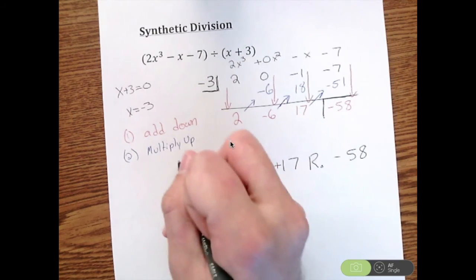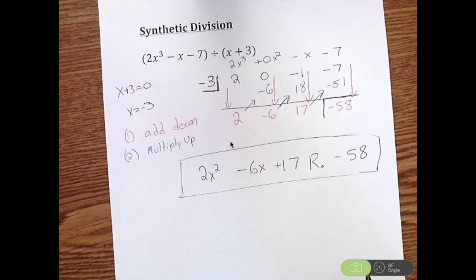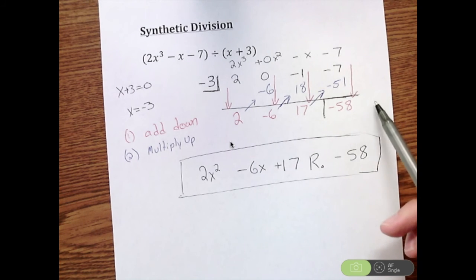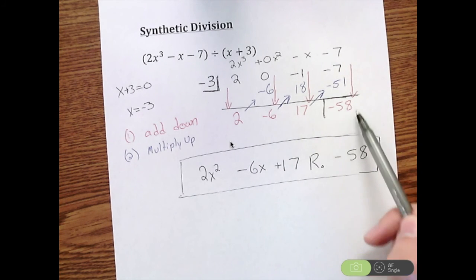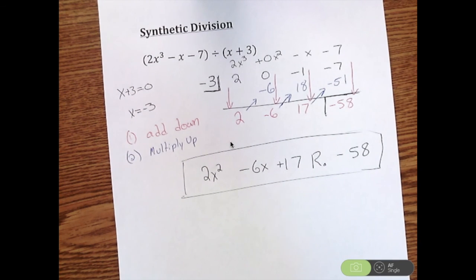So our answer there is 2x squared minus 6x plus 17 with a remainder of negative 58. And again, your remainder is always going to be that final number that you have there. Everything else is also your answer too. And that is synthetic division.